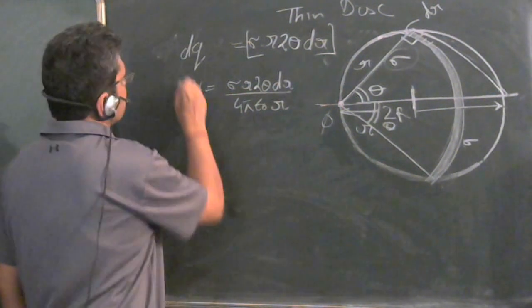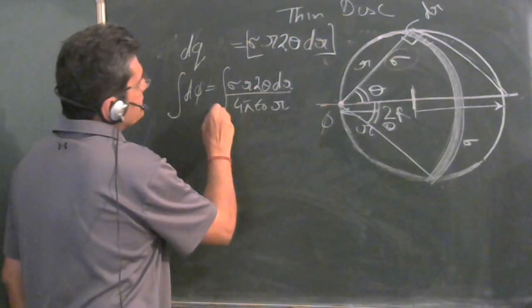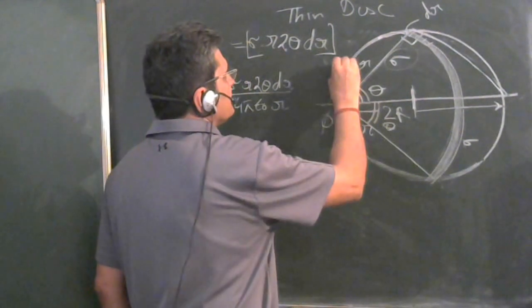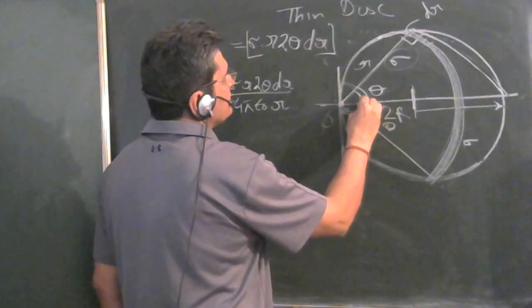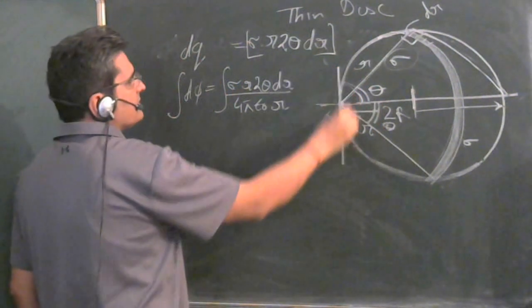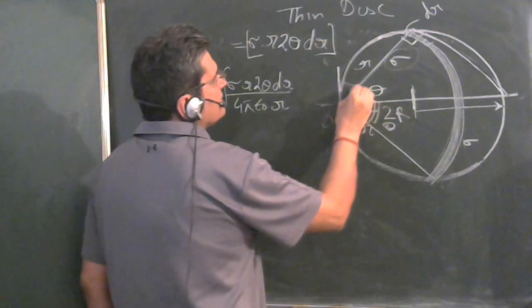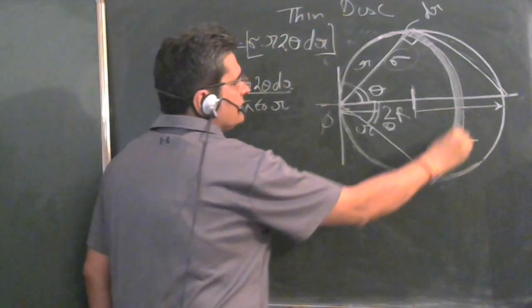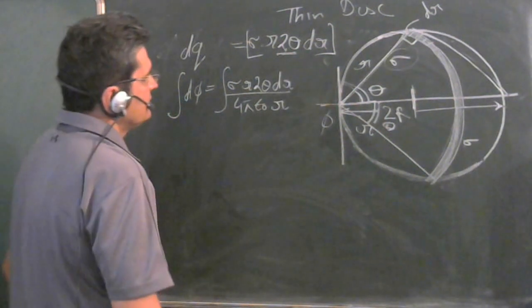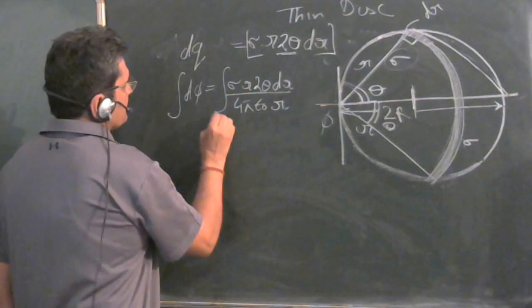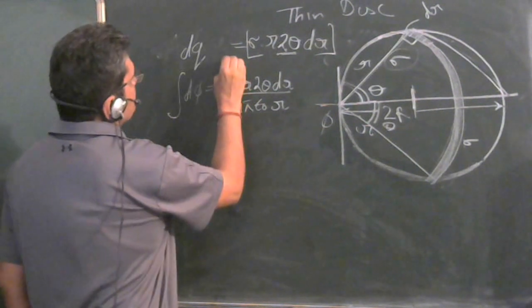If you integrate it and take theta from here, this will be pi by 2 and this will be 0. Don't take minus pi by 2 to pi by 2 because half of the angle is covering the full segment of arc because we have taken twice theta here. So theta is varying from 0 to pi by 2.